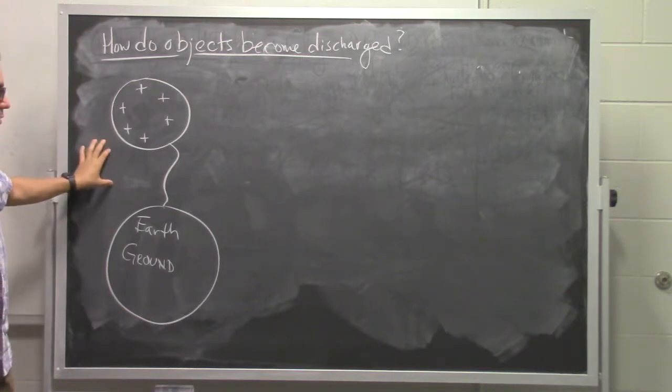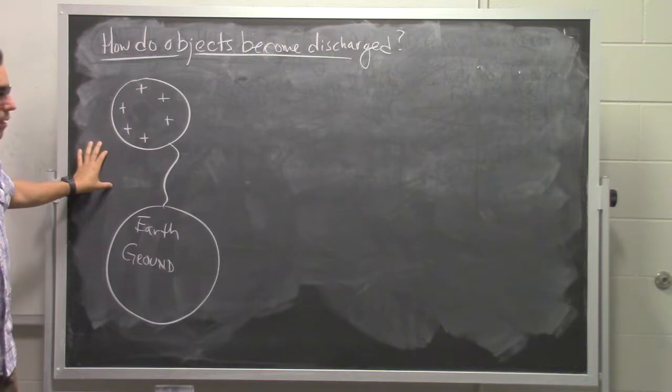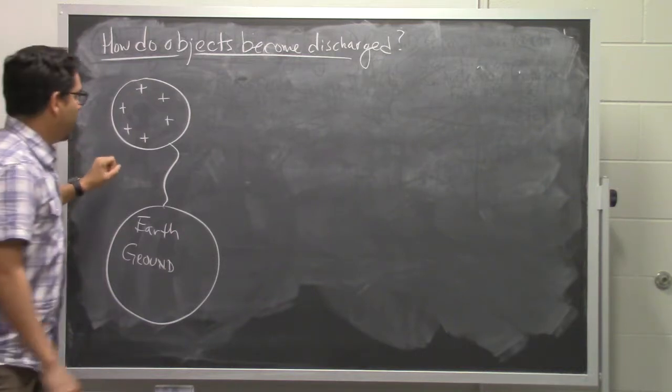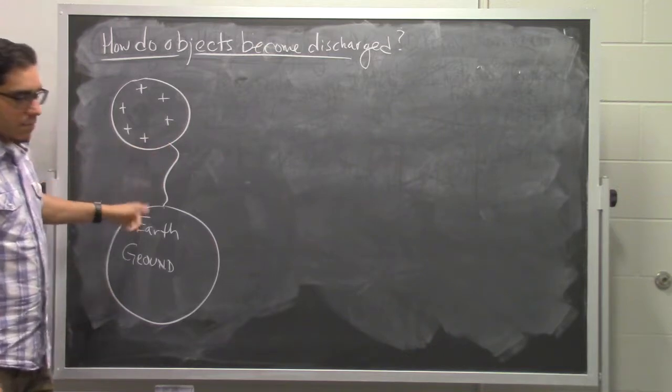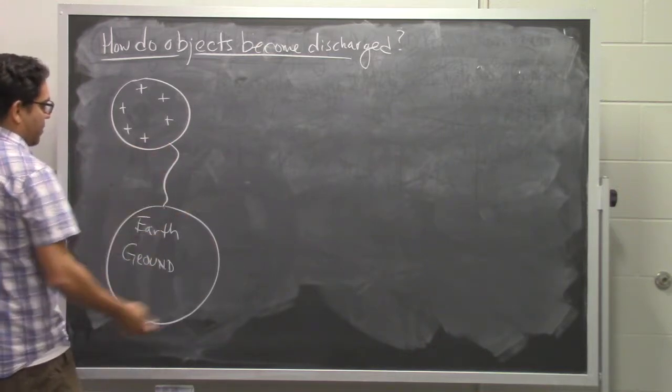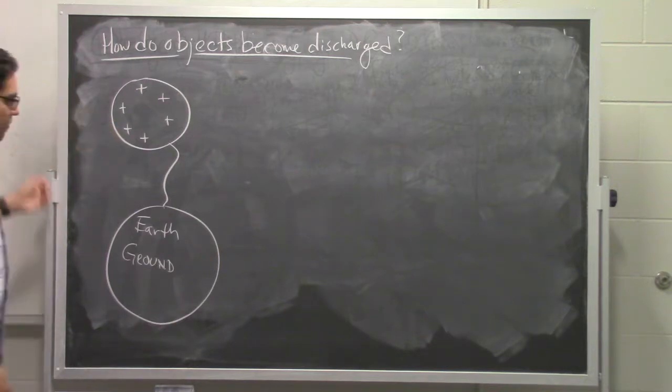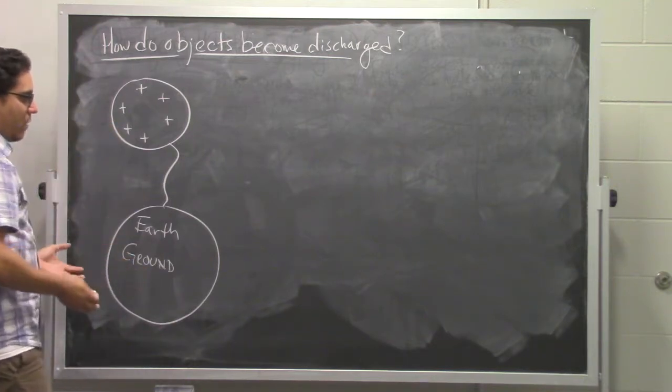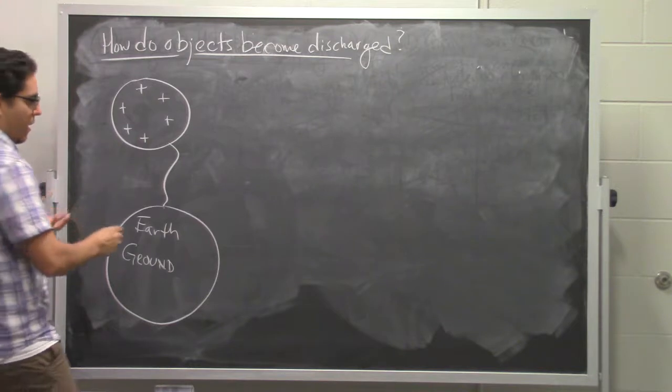This is often done in laboratories with metal pipes that actually go into the ground, or wires that are sunk into the ground or things like that. But the idea is just a straight, direct connection to the earth. So what happens here is the earth is much, much bigger than this object, and so it has a lot of electrons that are available to be transferred to that object.